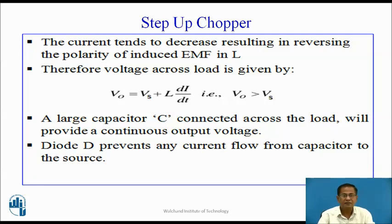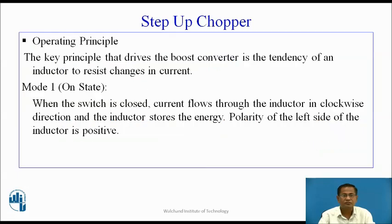A large capacitor connected across the load provides a continuous output voltage. Diode D prevents any current flow from the capacitor back to the source.